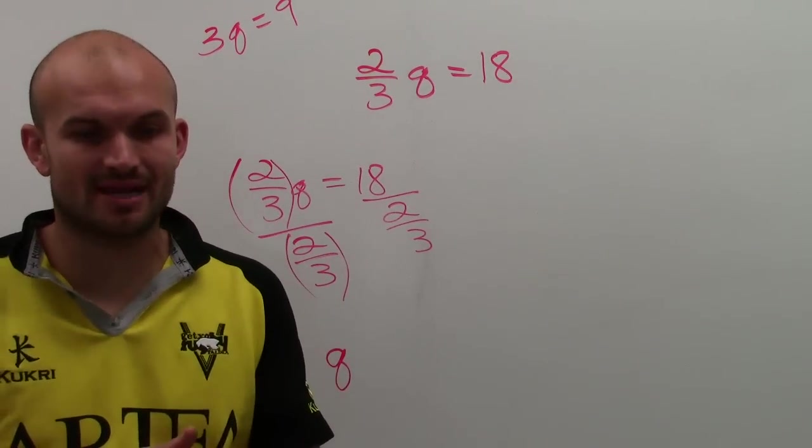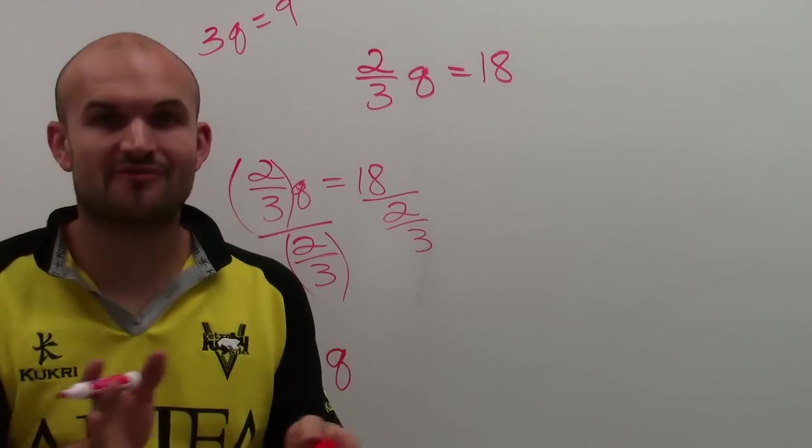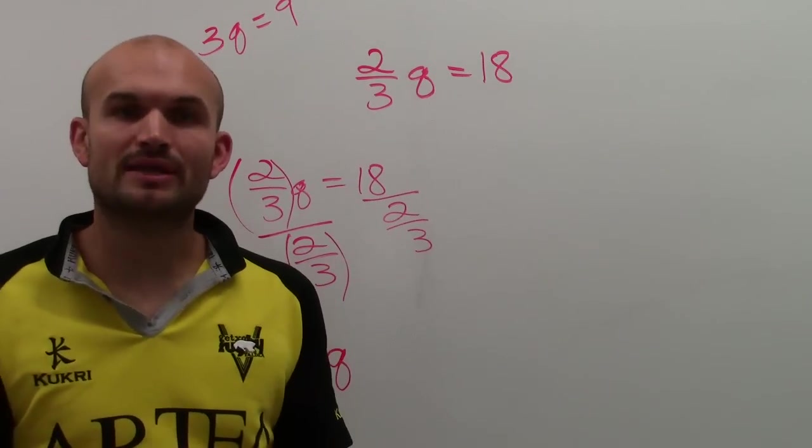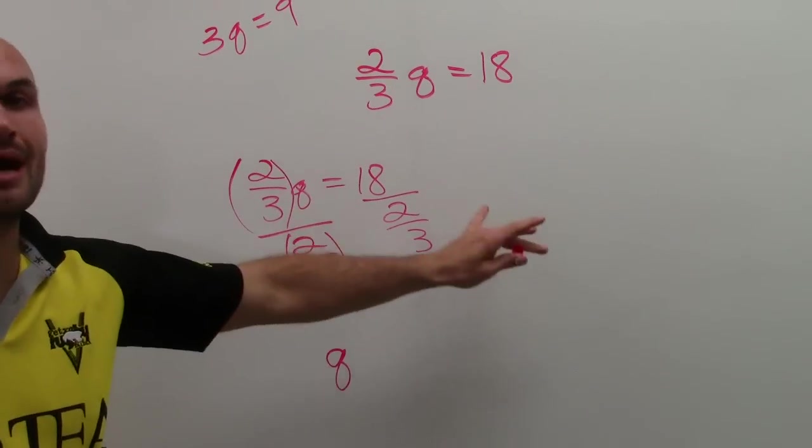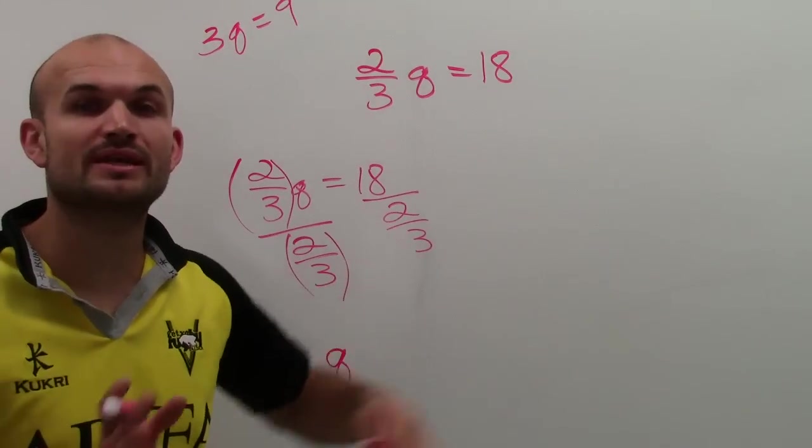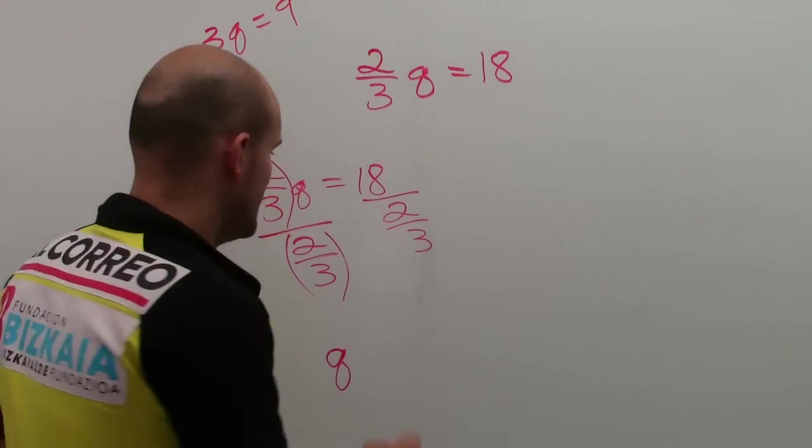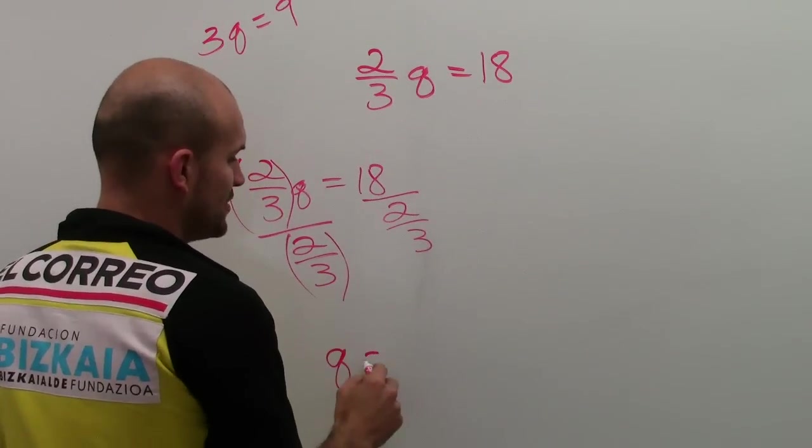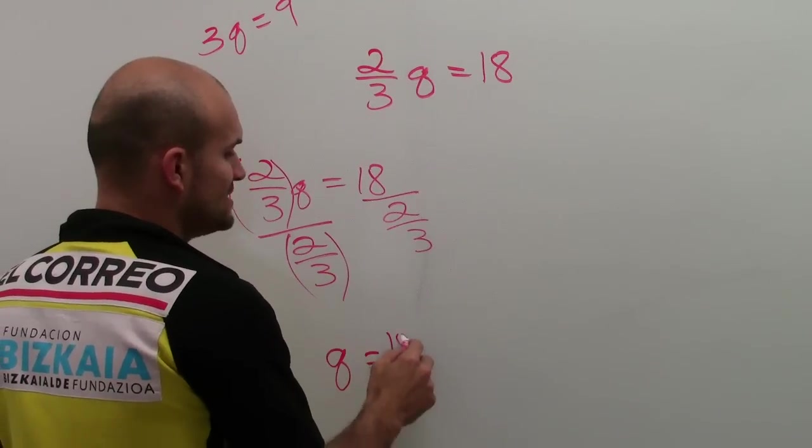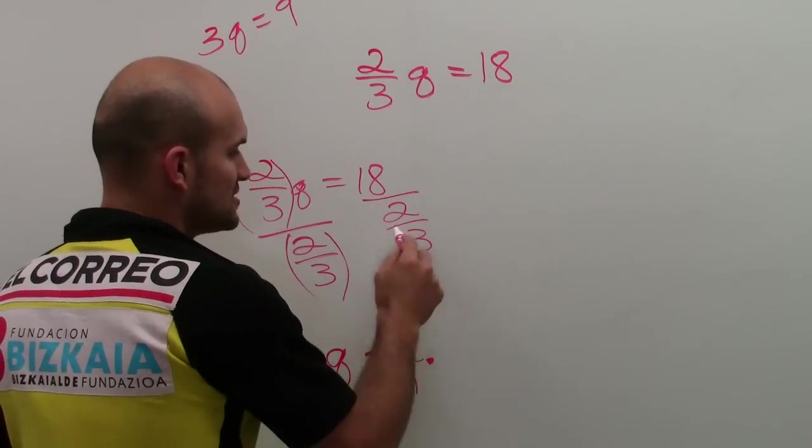Now here I have 18 divided by 2/3. We have to remember when dividing a fraction, what we can do is reciprocate, take the reciprocal and multiply. So rather than dividing by 2/3, what I can also do which is an easier operation is just take the reciprocal and multiply across.